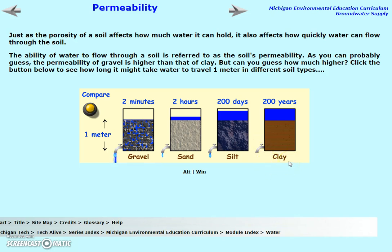Clay has such a low permeability that it would take almost 200 years for the water to get through it — more than a human lifetime. So we say that clay is impermeable; in our lifetime, clay will not let water through it. Silt would take about 200 days — eventually the water would go through — so it has a very low permeability.